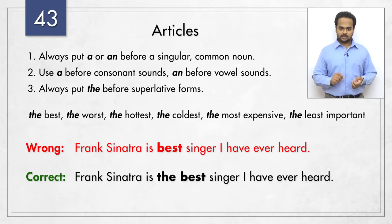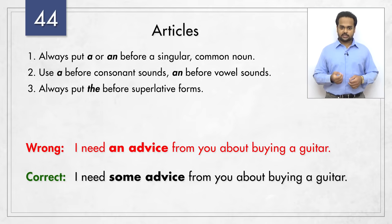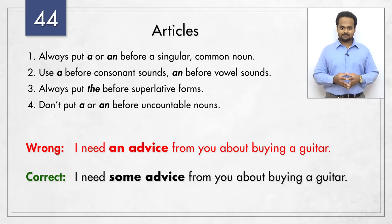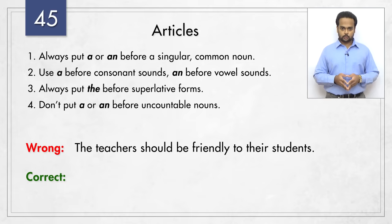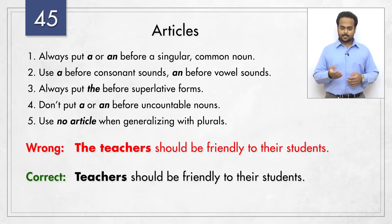Here's another extremely common error – 'I need an advice from you about buying a guitar.' We need to say 'I need some advice from you' or 'I need your advice about buying a guitar.' Advice is an uncountable noun and we don't use 'a' or 'an' before uncountable nouns. English can be a crazy language sometimes – 'idea' is considered countable, but 'advice' is considered uncountable. So you can say 'an idea,' but you cannot say 'an advice.' Sentence number 45 – 'the teachers should be friendly to their students' should be 'teachers should be friendly to their students.' We are making a general statement, and to generalise with plurals such as 'teachers,' we don't use 'the.'